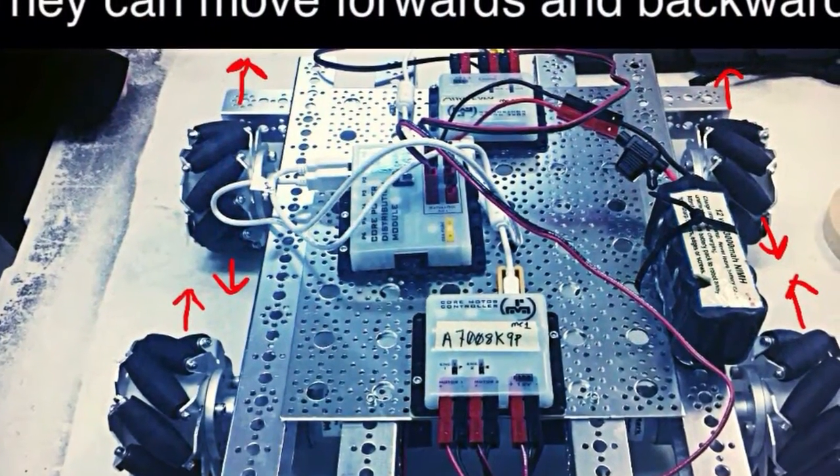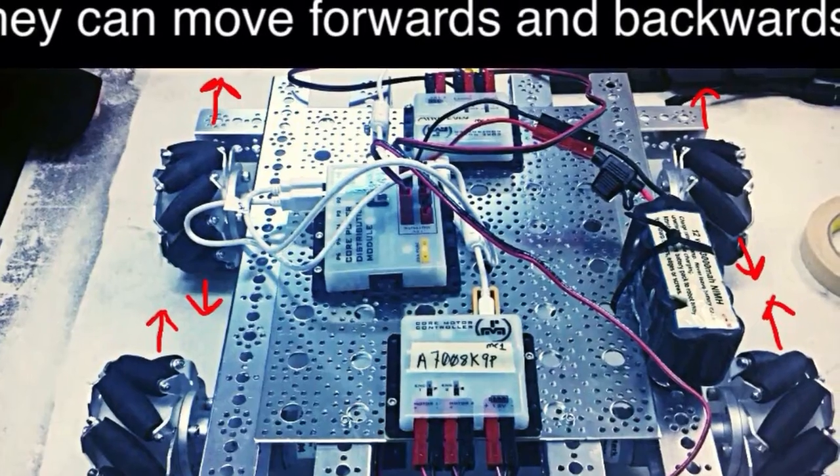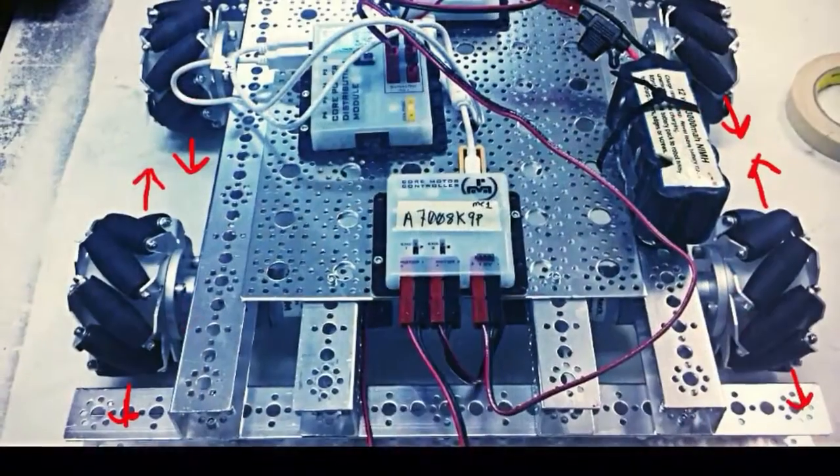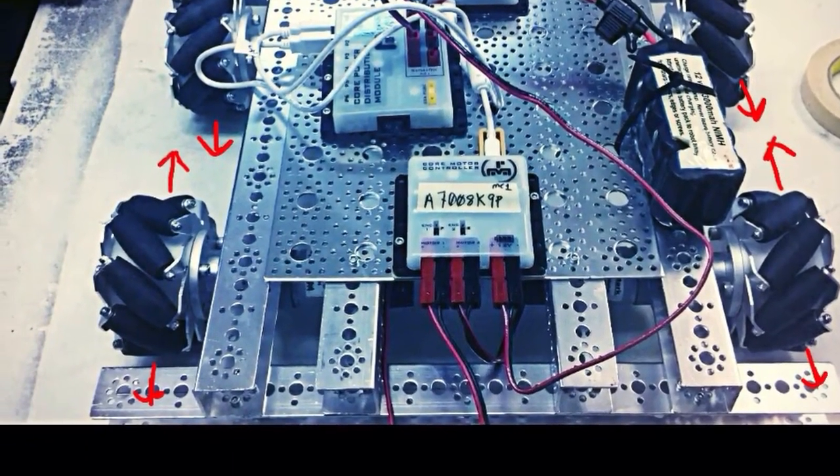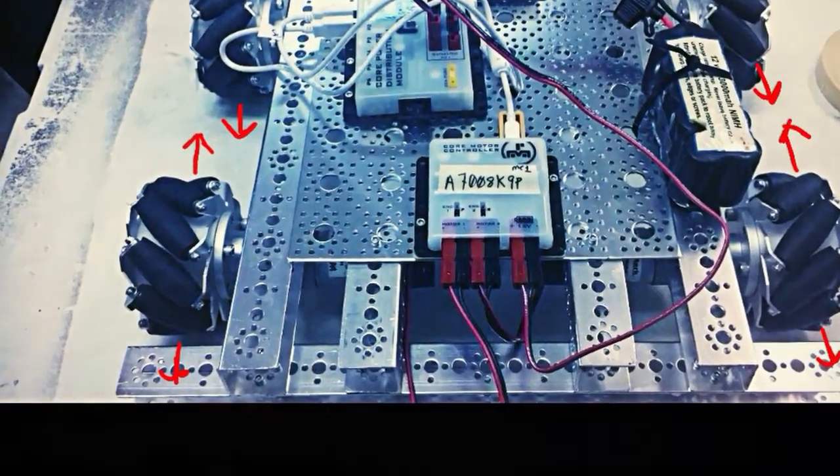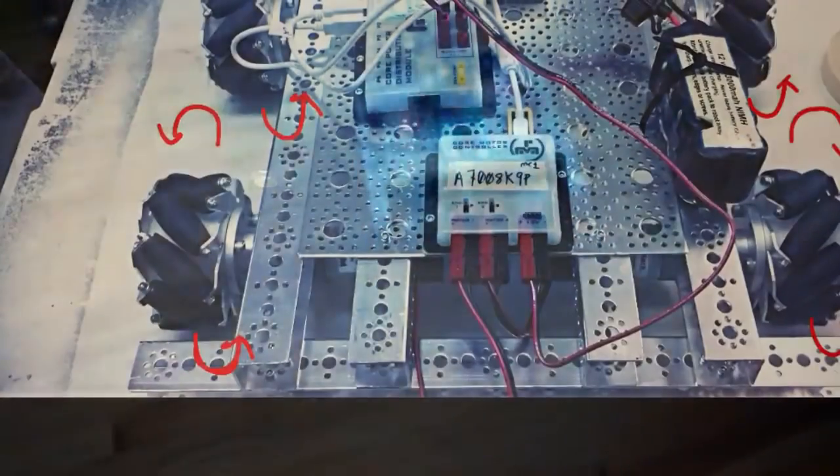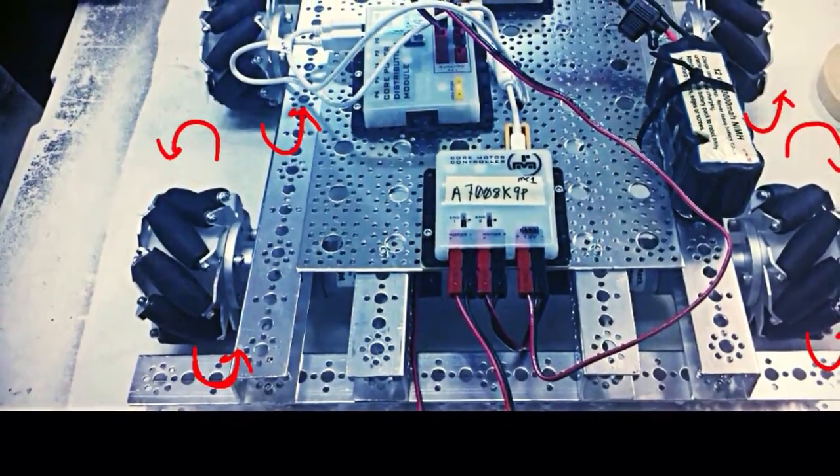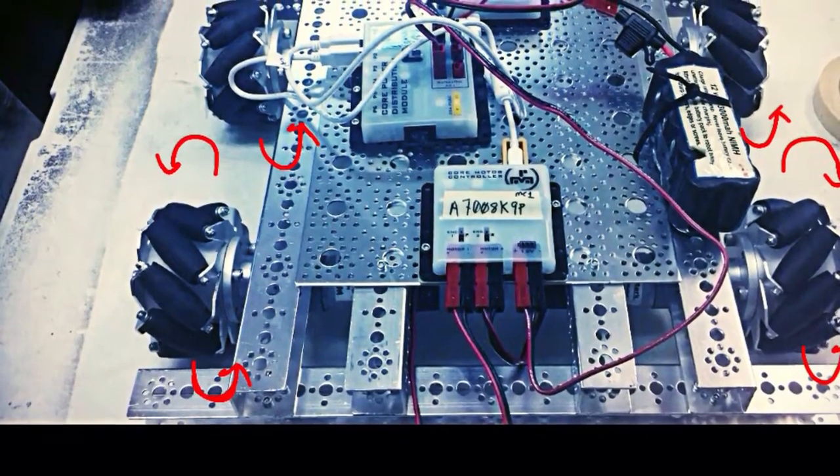They can move forwards and backwards by moving all the wheels in the same direction. Rotate by moving one side of the wheels in the opposite direction.